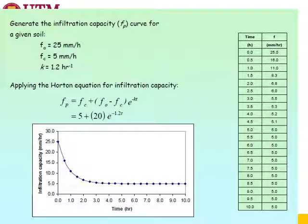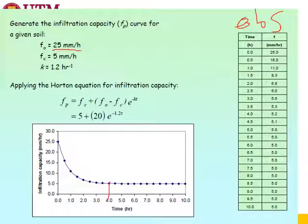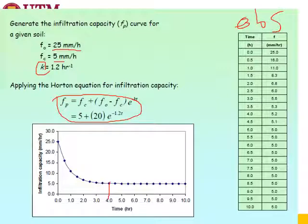Using the formula, we have time and infiltration capacity at the beginning of each interval — for example, 25 at time 0, 15.98 at 0.5, and 11.02 at 1. We estimate average infiltration over each interval: averaging 25 and 15.98 gives 20.49; averaging the next pair gives 13.5, and so on. Then we multiply by the time interval — since units are mm/hour, multiply by 0.5 to get 10.24 mm. The last column gives the infiltration volume in millimeters over each interval. In the end, we get the cumulative relationship between time and cumulative volume of infiltration. The formula for this specific site becomes: f = 5 + 20e^(-1.2t).